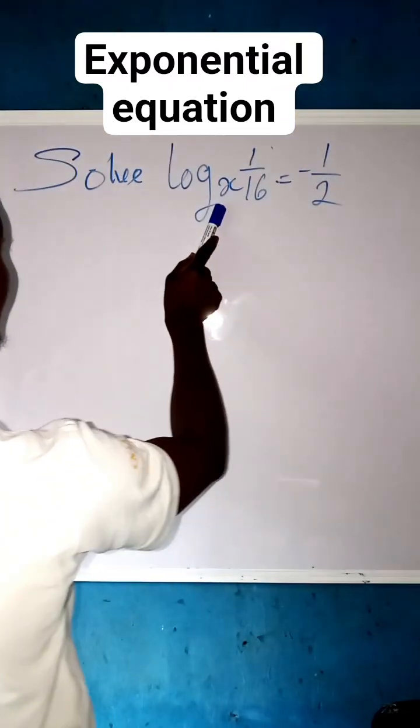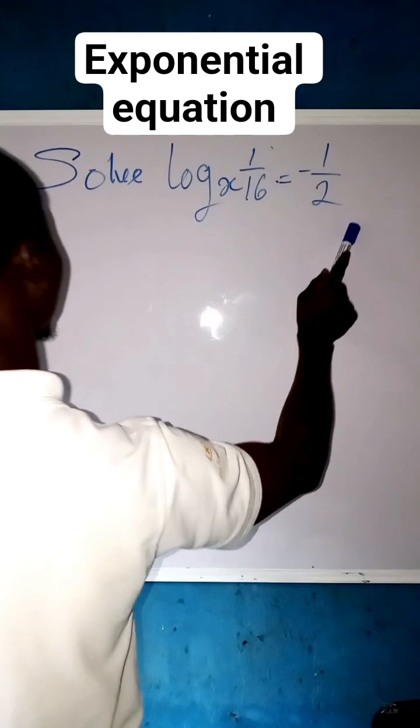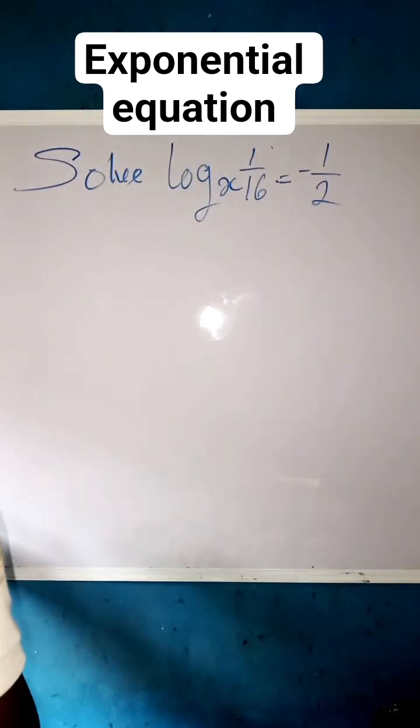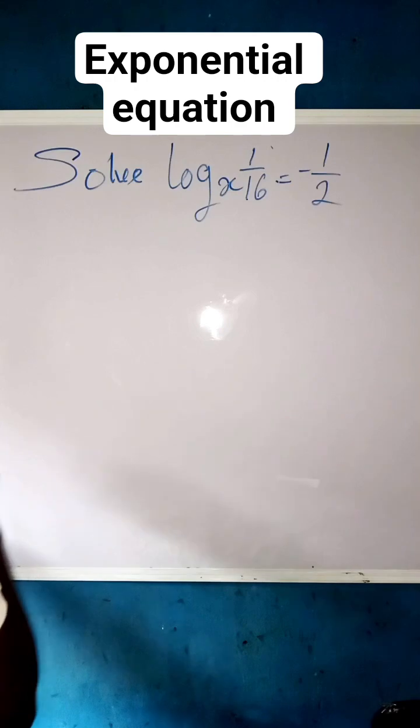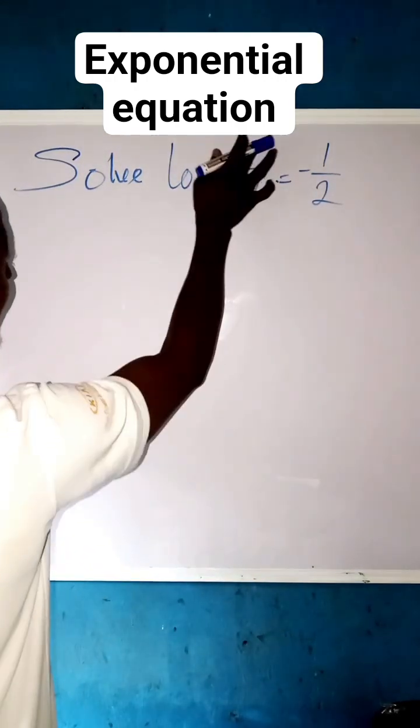Solve log x raise the power of 1 over 16 equals to minus 1 over 2. Now we are going to apply log indices to get this up. This is a technical question, and to solve this technical question will not be technical. So what we do here is since you're having log x raise the power of 1 over 16 equals to minus 1 over 2.